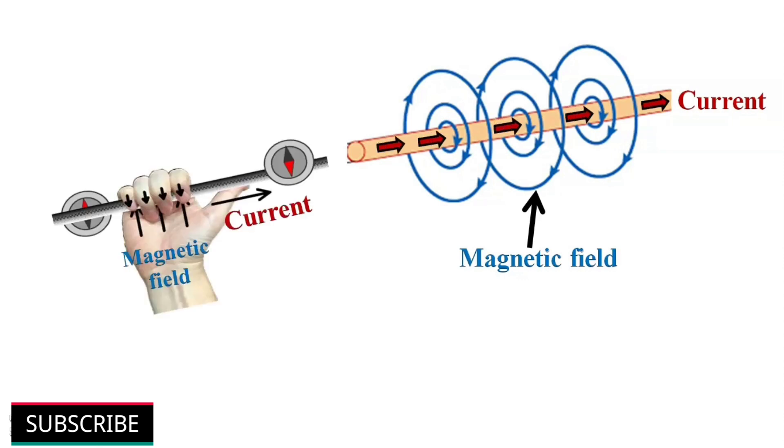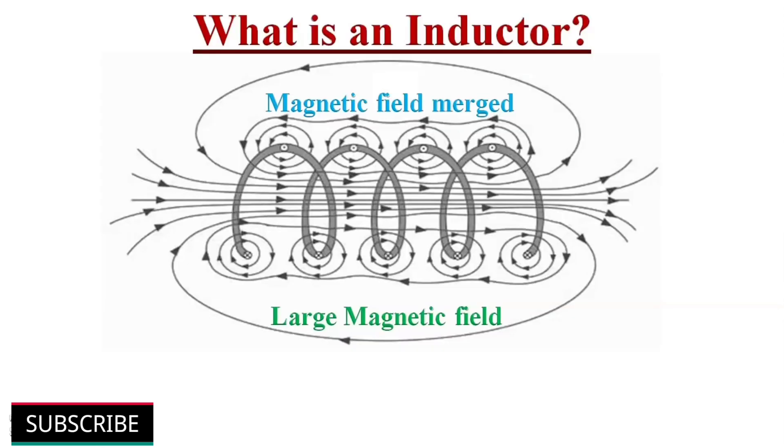The direction of the magnetic field is found using the right hand grip rule. When current flows through a coil, each wire produces a magnetic field. But now they will merge together and form a large and more powerful magnetic field.